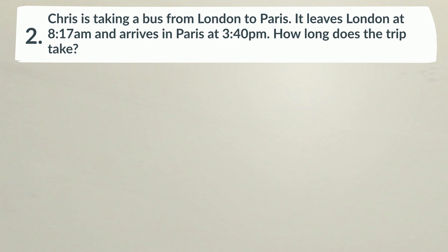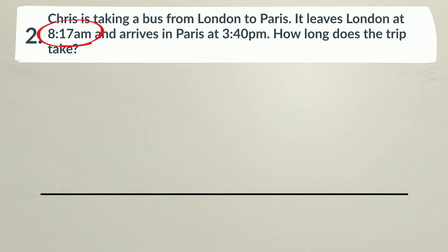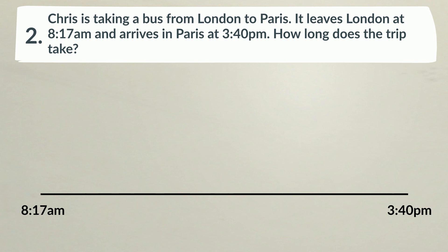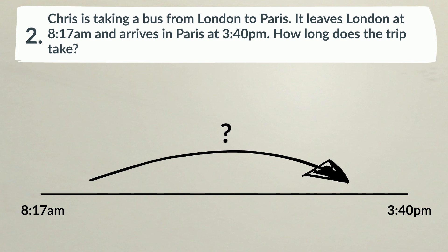Number 2. Chris is taking a bus from London to Paris. It leaves London at 8:17am and arrives in Paris at 3:40pm. How long does the trip take? We have the start time, 8:17am, and we have the end time, 3:40pm. We need to calculate how much time has elapsed.